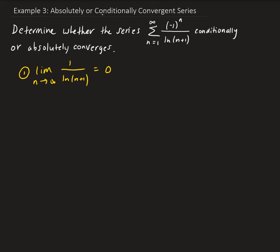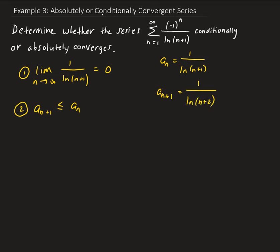Secondly, we need to show that the (n+1)th term is less than or equal to the nth term. The nth term is 1 over the natural log of n plus 1, whereas the (n+1)th term — substituting n plus 1 in for n — gives us 1 over natural log of n plus 2. So we need 1 over natural log of n plus 2 less than or equal to 1 over natural log of n plus 1.